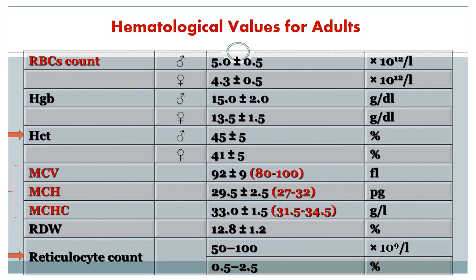Another parameter is the reticulocyte count. A reticulocyte is an immature RBC — the stage just before mature RBCs. Reticulocytes contain remnants of ribosomal RNA. They are released from bone marrow and stay in the spleen for one to two days for maturation, then convert to mature RBCs. The reticulocyte count reflects bone marrow activity; normally it is 0.5% to 2.5%.